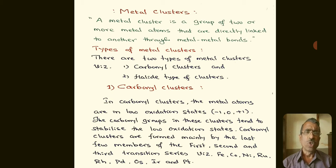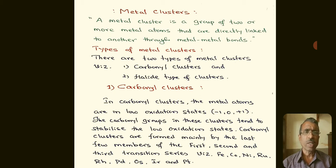These are also types of carbonyls. There are two types of metal clusters: one is carbonyl clusters and another one is halide type of clusters.